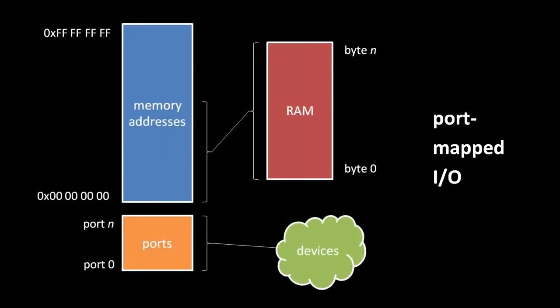Other systems use port-mapped I/O, in which a separate address space — so-called ports — are used for device registers. In this arrangement, reading and writing the device registers requires distinct input and output instructions. For example, an instruction for writing to a device register might look something like: output register 2 to port 4498.